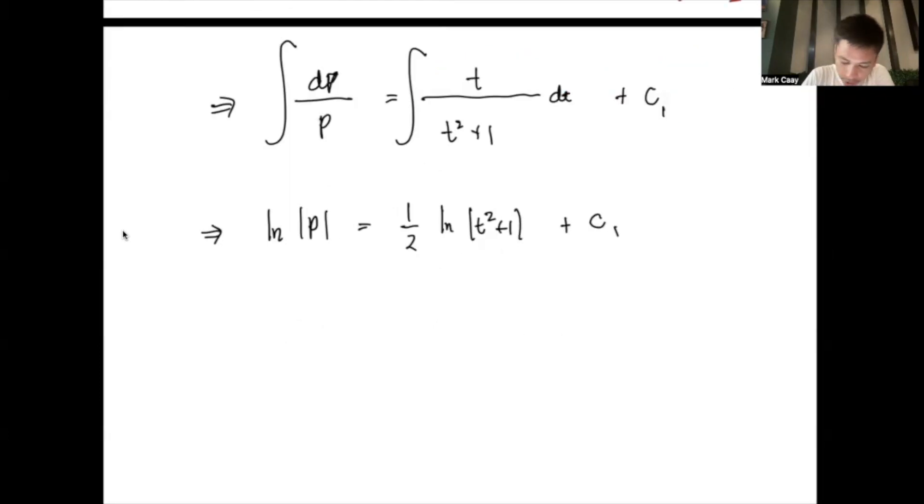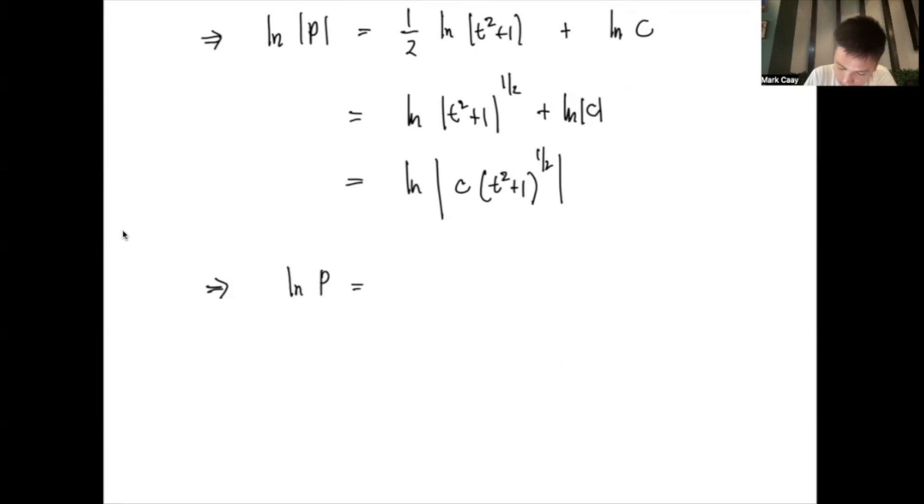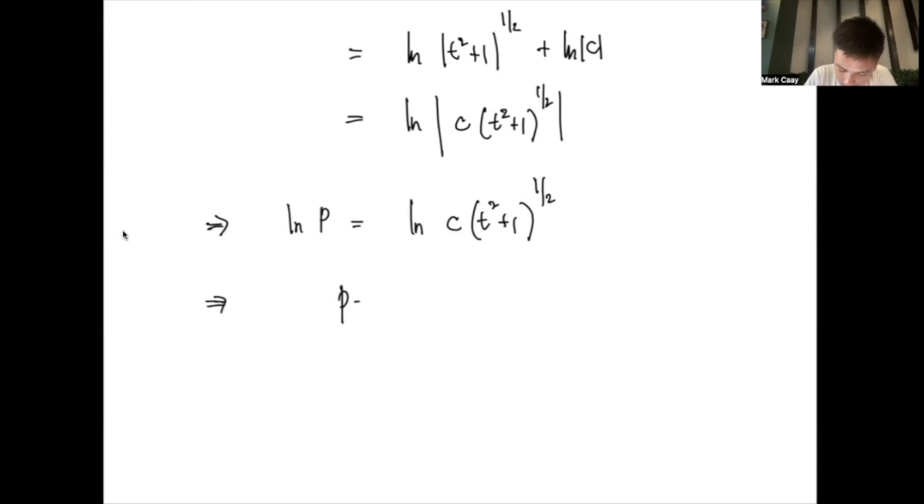Okay, so instead of using c1, I'll replace this with ln of c. So, this becomes ln of t squared plus 1 raised to 1 half plus ln of c. So, this is ln of c times t squared plus 1 raised to 1 half. I have ln of p equals ln of c times t squared plus 1 to the 1 half. Hence, I have p equals c times the square root of t squared plus 1. So, this is now the solution.